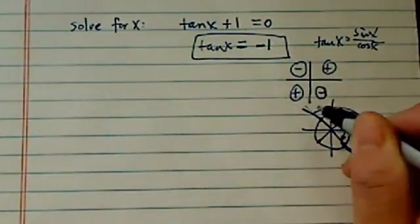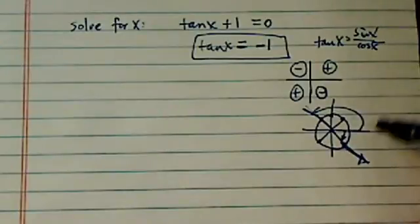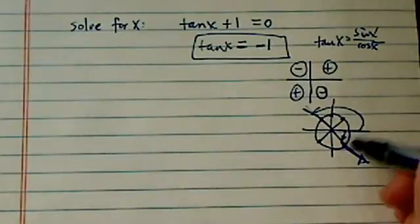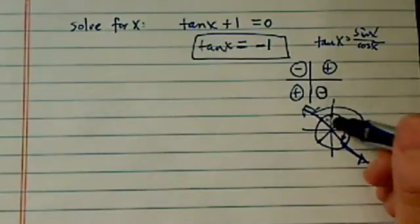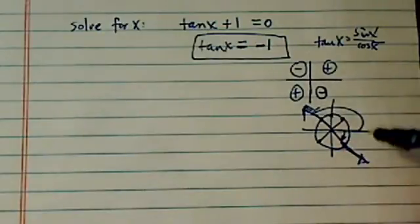So if you were to rotate counterclockwise, you would get this angle. If you rotate clockwise, it's this angle. So you do have two arms, two terminating arms that would give you the same tangent.